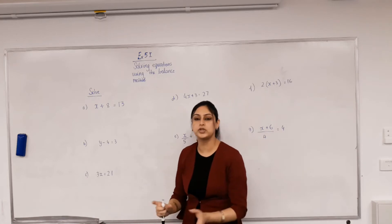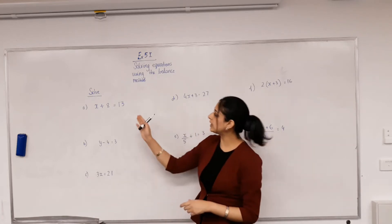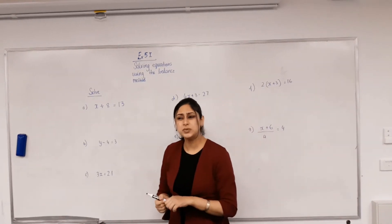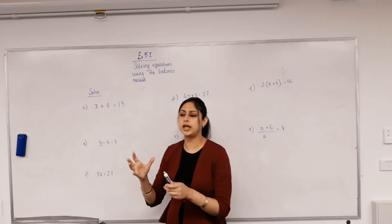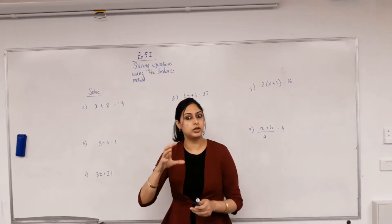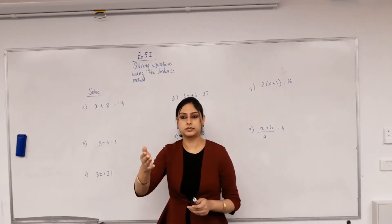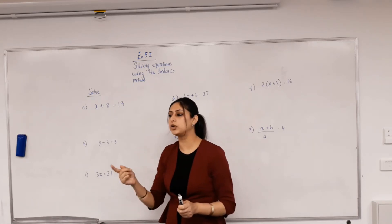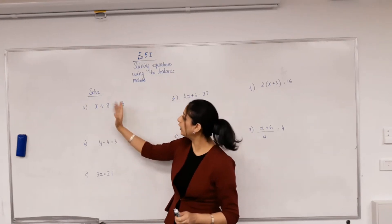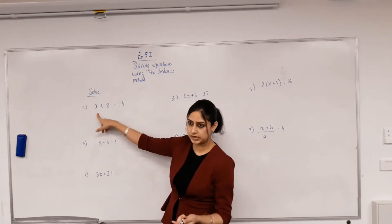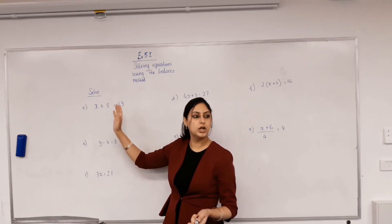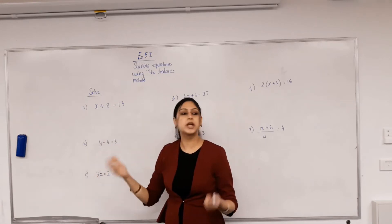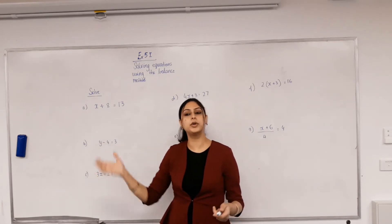It was good that you understand what an equation is and how to solve it. So we have to solve all these equations but we're not going to use a flowchart. What did we actually do in a flowchart once we had an equation? We backtracked. How do we do backtracking? We do inverse operations. So if x has 8 added to it and I get 13, I can backtrack and undo it to get my original number.